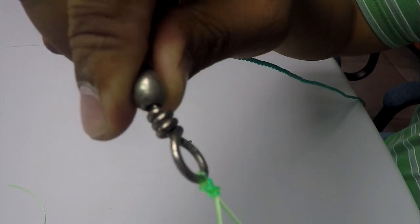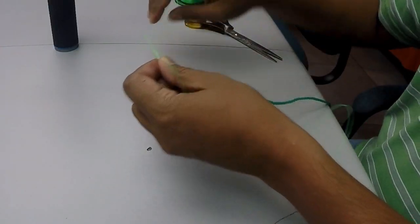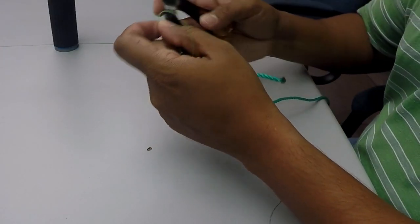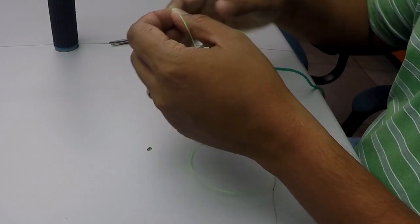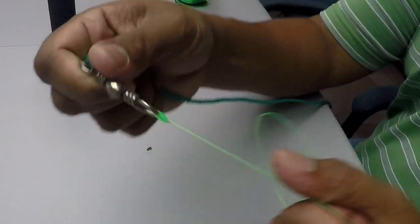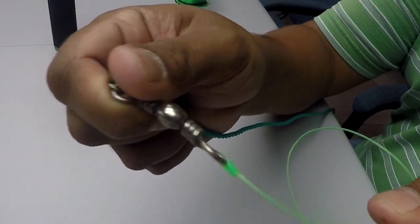Take a look at that. That is not going to come off. Take your scissors, nail clipper, whatever it is, and you cut off the end. So there you have it. Uni knot to the hook.